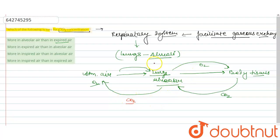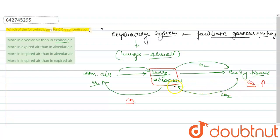In the lungs, the carbon dioxide concentration is relevant here. CO2 concentration in body tissues is very high because CO2 is accumulated by various metabolic processes. When CO2 concentration is very high in body tissues, it moves towards the lungs, because the movement of CO2 is from higher to lower concentration. The CO2 level is continuously higher in the body tissue side.